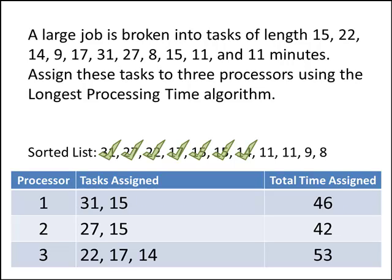Now we've got a task that's 11 minutes long. Processor two has the least amount of time assigned, so that's where we'll put our 11. Now processor one has the least amount of time assigned, so that's where we'll put our next 11-minute task. For our next task that's 9 minutes long, processors two and three are tied with 53 total minutes each, so we break that tie by assigning it to the lowest numbered processor — processor two. Finally, our last task of 8 minutes goes to processor three, which has 53 minutes — the lowest remaining total.